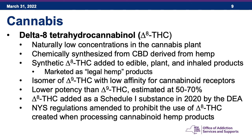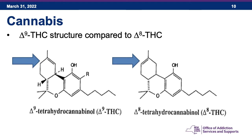Delta-8 is considered to have no medicinal purposes and a high potential for abuse. New York State regulations were recently amended to prohibit the use of delta-8 THC created when processing cannabinoid hemp products. Chemically, delta-8 and delta-9 THC are isomers — there is just a shift of the chemical bond from one position to another, making them related but not identical compounds. Despite lower potency, delta-8 does have psychoactive properties and is something the government wants to regulate.